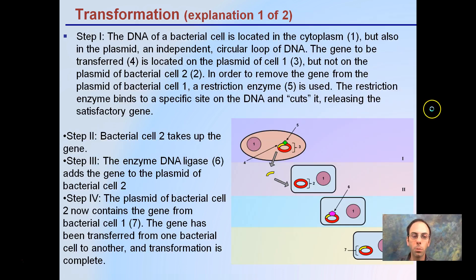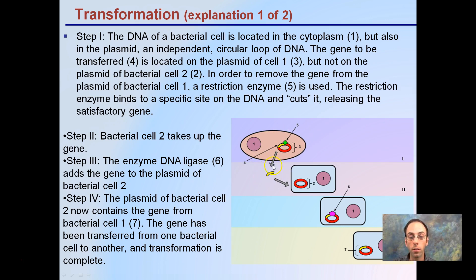To go into this in more detail, here is a more detailed explanation. The process is still the same. We have an initial cell where the gene of interest is a small yellow region. We insert that into our rectangular blue cell, which takes up that gene of interest, puts it into its plasmid, and replicates it.